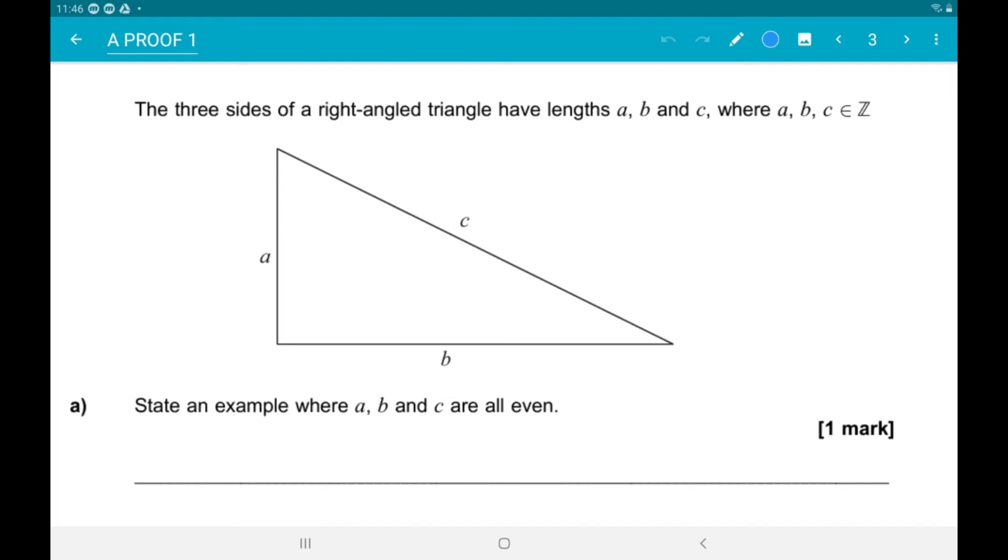Alright, so we're thinking Pythagoras, so any multiple of the 3, 4, 5 triangle will work. So we could have a as 6, b as 8, and then c as 10.